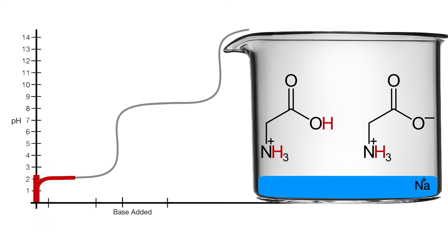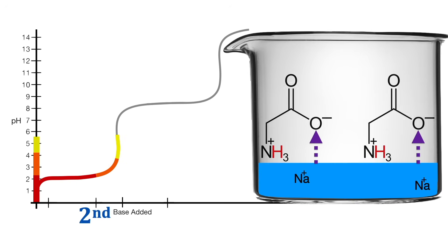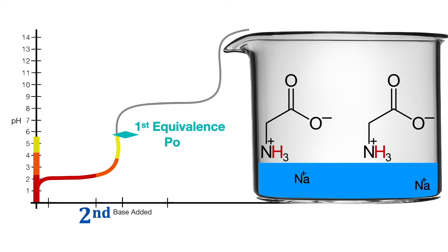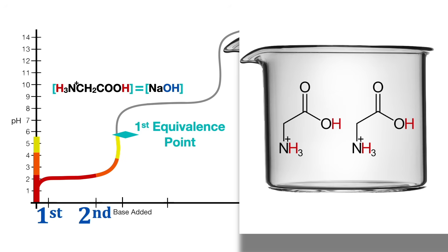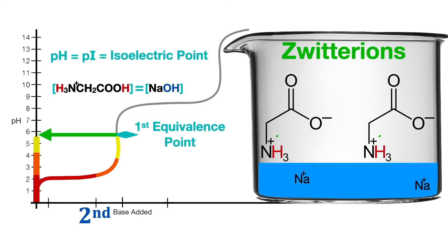Then more base titrant is added — in this example, a second base compound. The hydroxide base readily reacts with the C-terminus proton of the remaining protonated amino acids, deprotonating their carboxylic acids and resulting in the deprotonation of the C-terminus of the full concentration of amino acids. This is the first equivalence point, when amino acid concentration equals titrant base concentration. For all amino acids except the basic ones, the first equivalence point is at the pH that indicates the pI of the amino acid — the isoelectric point — when the amino acid exists as a zwitterion, with a positive one charge at the N-terminus and a negative one charge at the C-terminus, making it net zero charged.